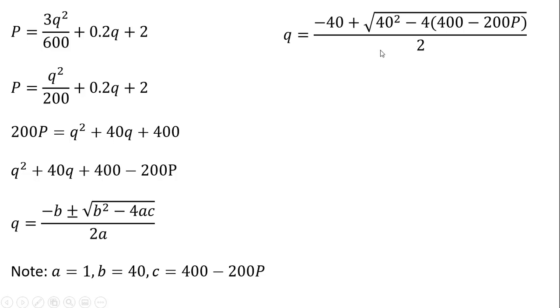And doing that, we get the following. And now let's simplify it. So I'm going to ignore the minus sign here at first. And so 40 squared is 1,600 minus 4 times 400 is minus 1,600.